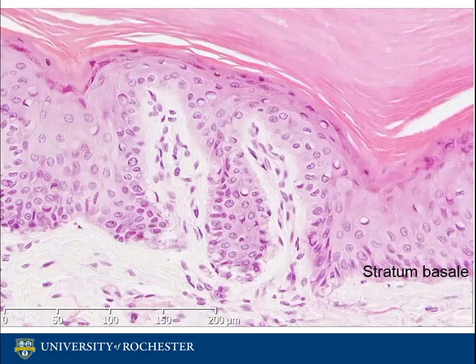The basal layer is the stratum basale. This layer is mitotically active and contains melanocytes and a single row of keratinocytes.